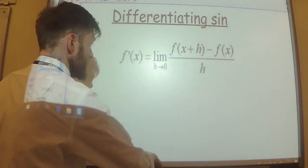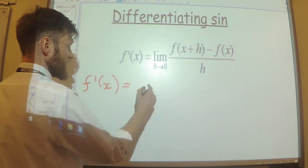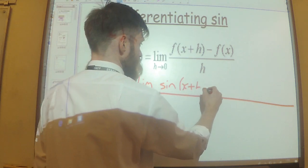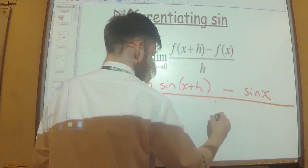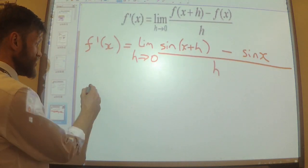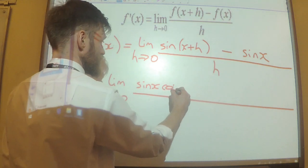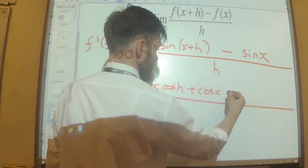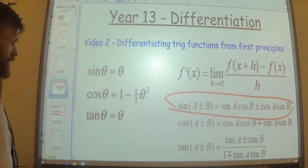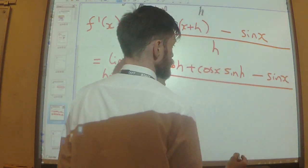So first off let's do sine. Starting with our formula where our function is sine: f'(x) equals the limit as h tends towards 0 of sine(x + h) minus sine(x), all over h. That's just replacing f(x) with sine. We are now going to use the addition formula to expand those brackets out. So I know that this will be equal to sine x cos h plus cos x sine h, minus sine x, all over h.